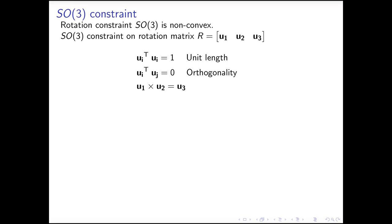It is easy to say that these constraints are non-convex. For example, for the unit length constraint, if we take two vectors with unit length, their convex combination does not have a unit length. Thus, the constraint is non-convex.